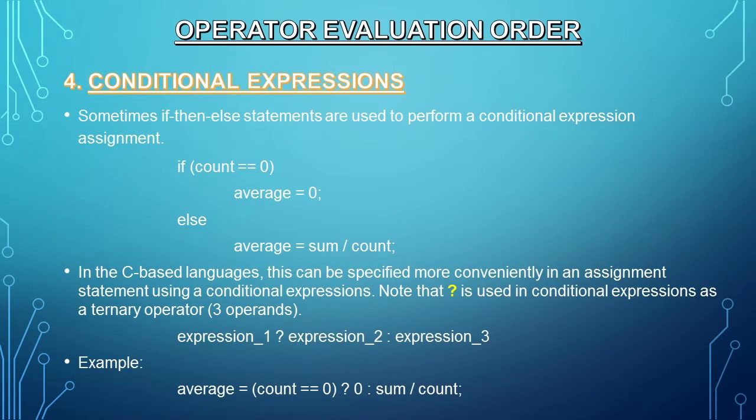The next topic is conditional expressions. Sometimes if-then-else statements are used to perform a conditional expression assignment. For example, if count equals 0, average will be 0; else average will equal sum divided by count. In C-based languages, this can be specified more conveniently using a conditional expression with the question mark as a ternary operator. The form is: expression_1 ? expression_2 : expression_3. So: average = (count == 0) ? 0 : sum / count;